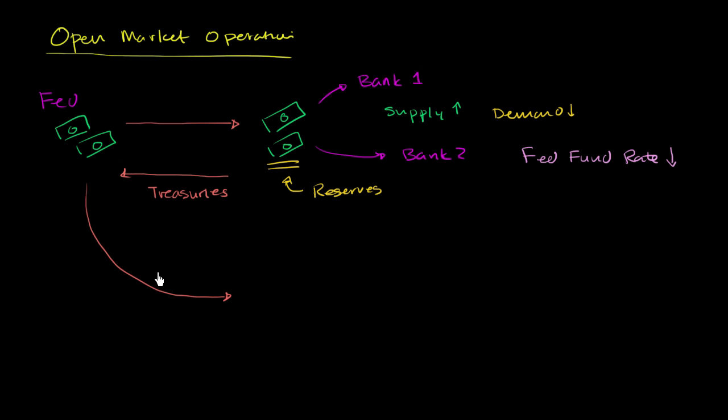It could buy longer term debt. So it could buy longer duration treasuries, things that are maybe 10-year treasury bonds or further out than even that. Or it could even buy completely different assets. It could maybe buy mortgage-backed securities.